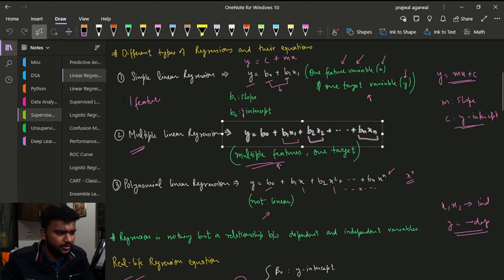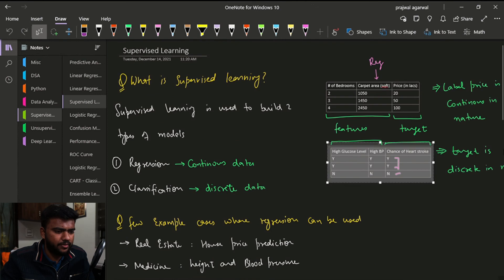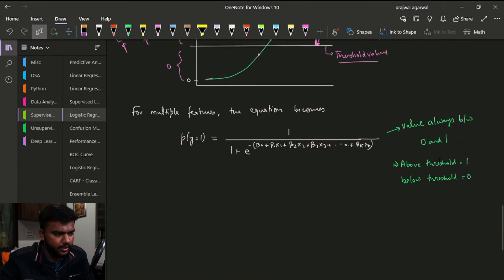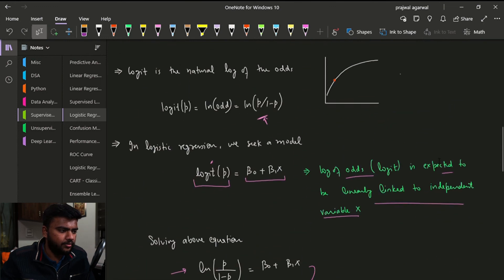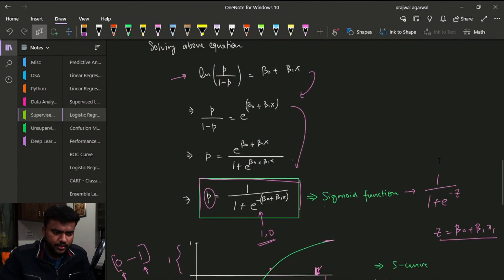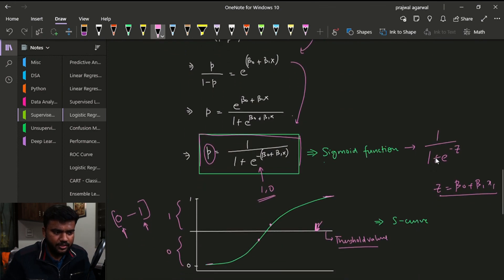So basically this is why, so this is in place of y we are just writing z. So that is what we are doing. And with this we come to the end of the logistic regression. The major takeaway of this video is going to be this function. Just remember this function, this is going to be very useful.